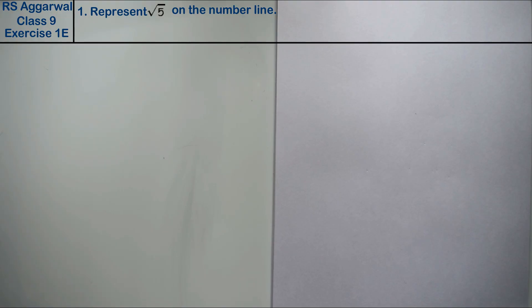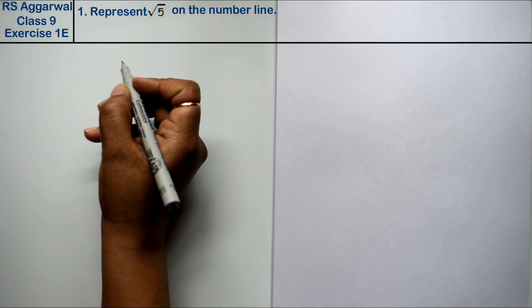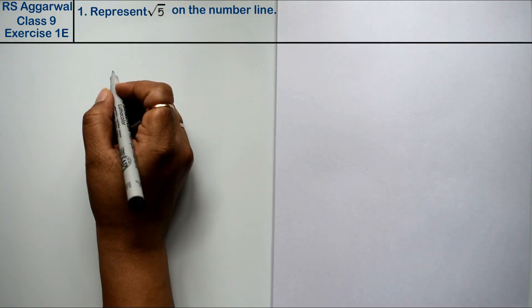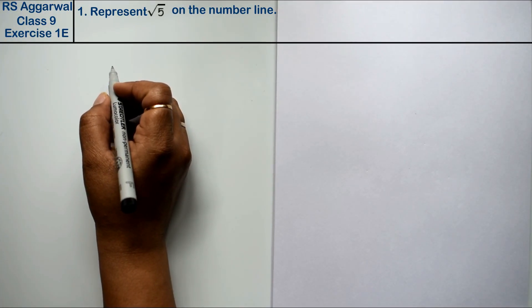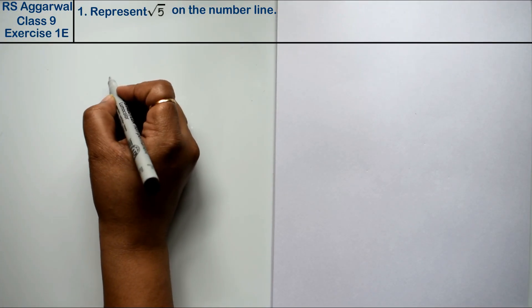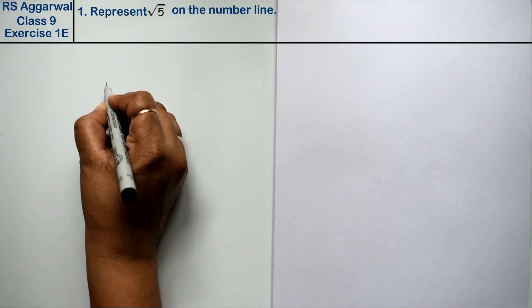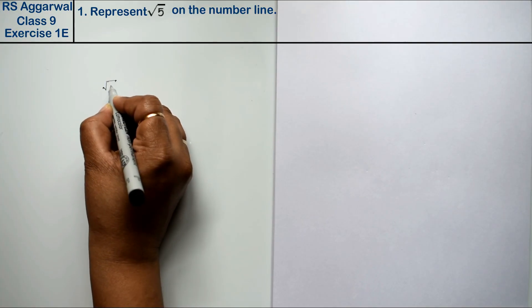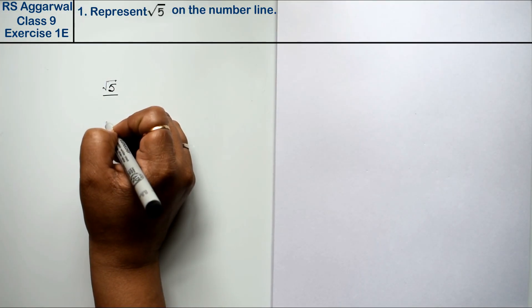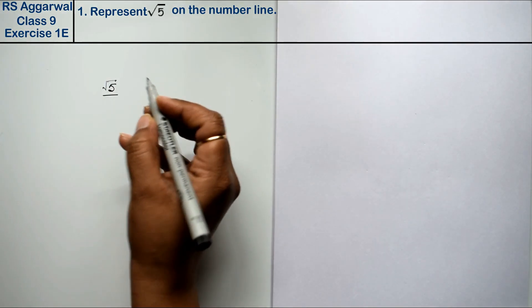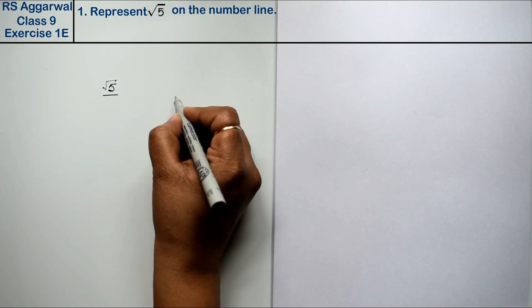Let's do question number one of Exercise 1E, that is Number Systems. Question number one is: represent root 5 on a number line. Friends, we have to represent root 5 on a number line, so before we represent root 5, we need to understand the approach.